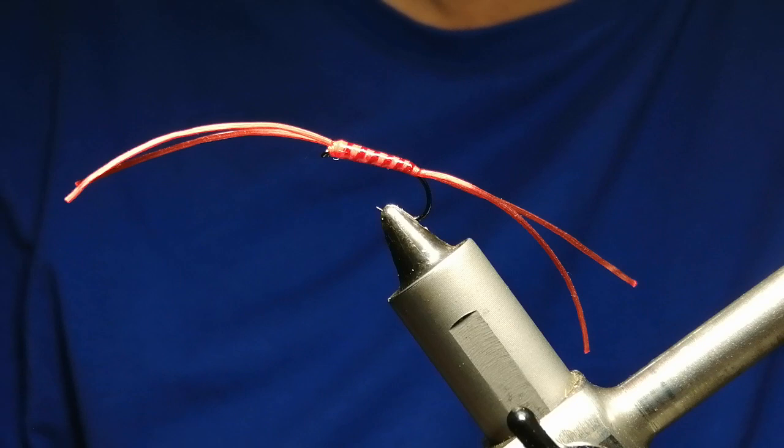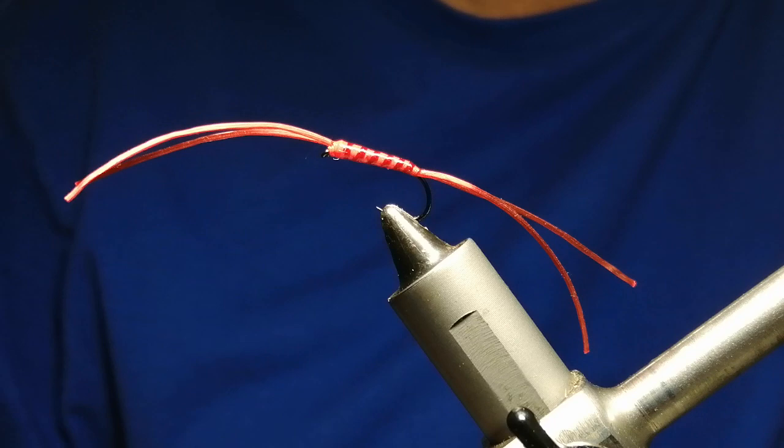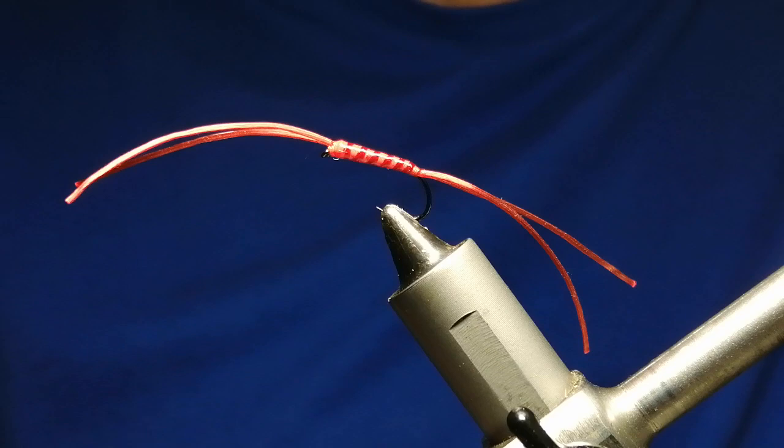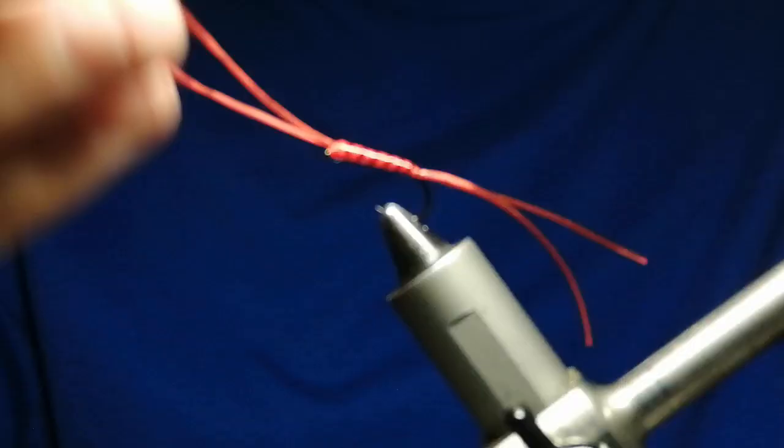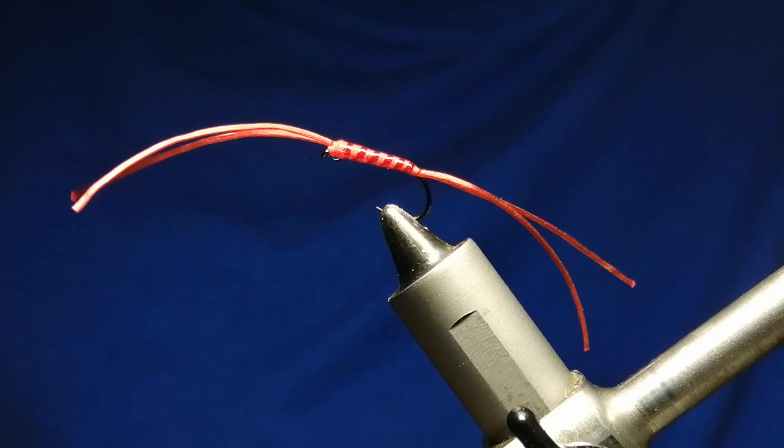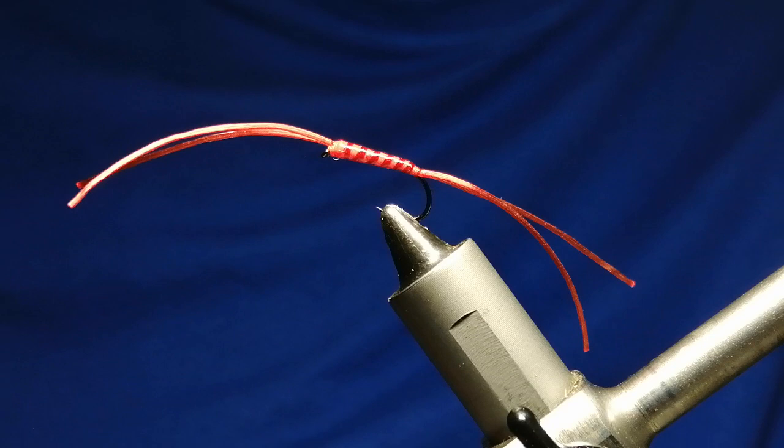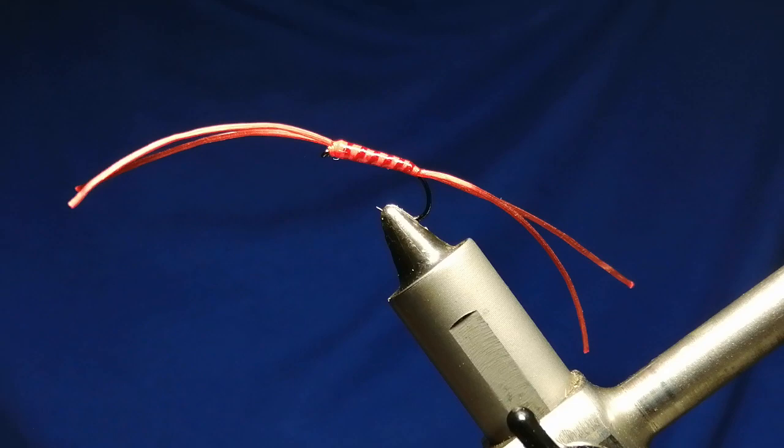Hi, welcome. Today's pattern I'm going to be tying is the Aps worm bloodworm, also known as a brandling. Brilliant pattern that most competition anglers and pleasure anglers do really well on throughout the winter months. It has the flexi floss legs which gives you lots of movement in the water, either when it's fished as a nymph or you can actually pull it on midge tips intermediate sinking lines. Catches thousands of trout throughout the winter months, so we'll get ahead and tie it.